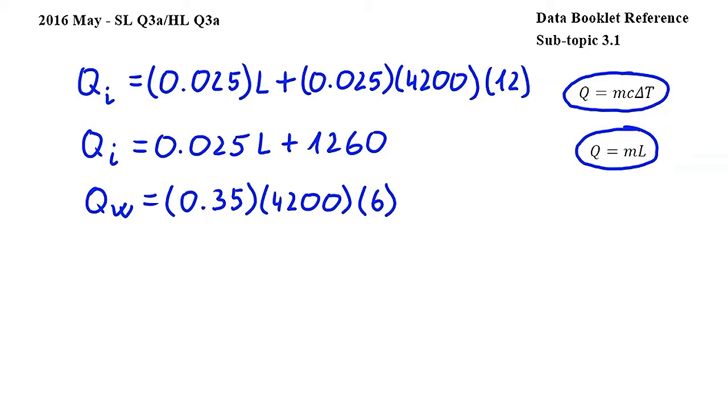Carrying out this calculation gives us 8820 joules. This is the energy lost by the water during the process.